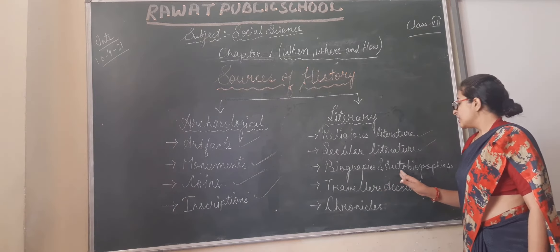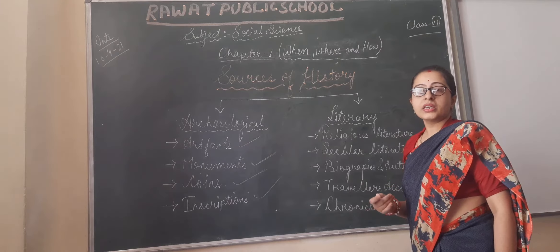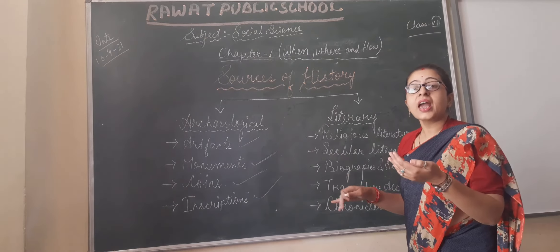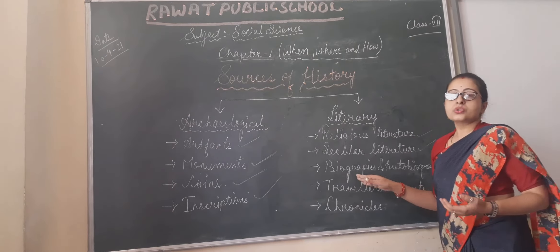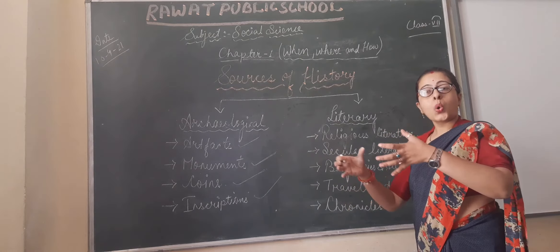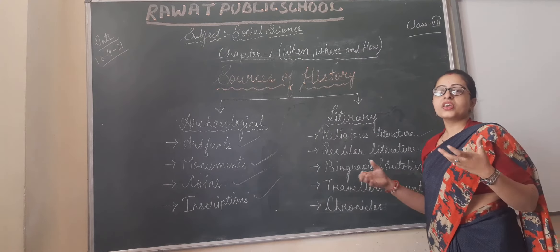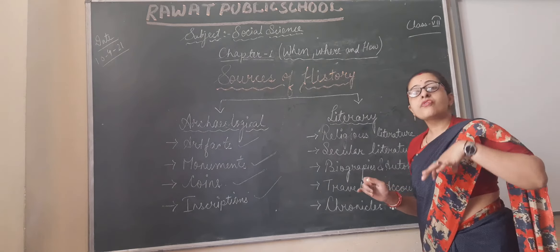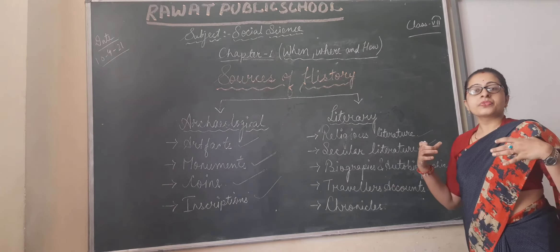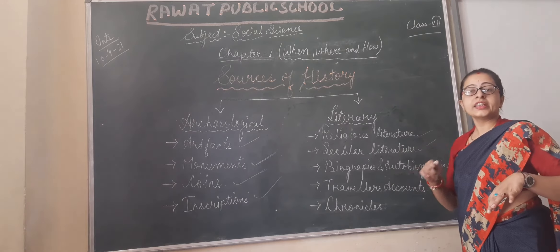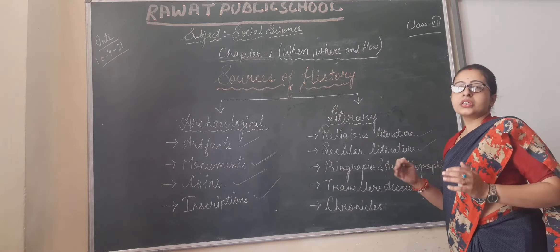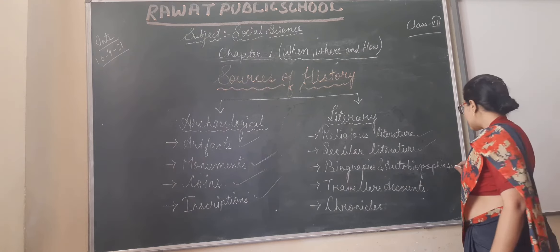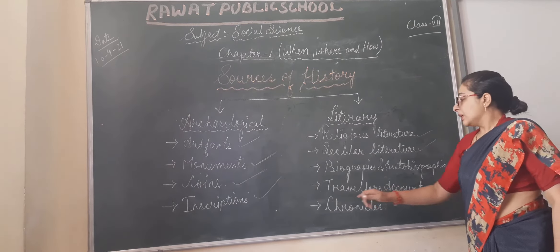From biographies and autobiographies also, we get many informations. Biographies are when one person writes about another person — writing about the whole journey of that person, so from biography we get many informations. Autobiography is when the person himself writes about himself, giving every information about him or her in the book — that is called autobiography.